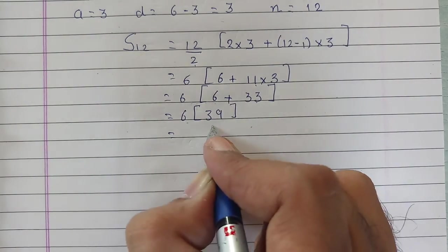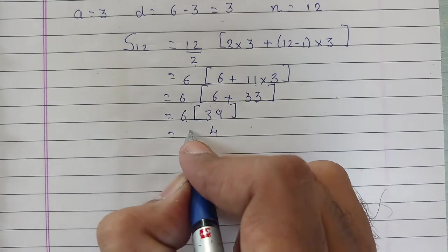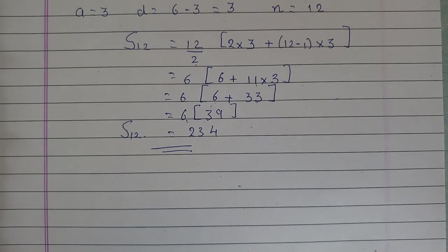Now multiply: 6 nines are 54, 6 threes are 18, 18 plus 5 is 23. So the total number of trees that will be planted is 234. Clear?